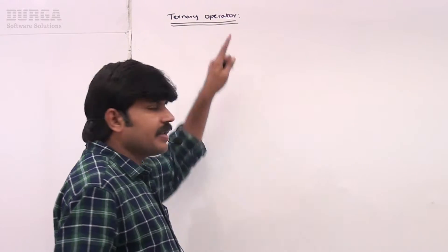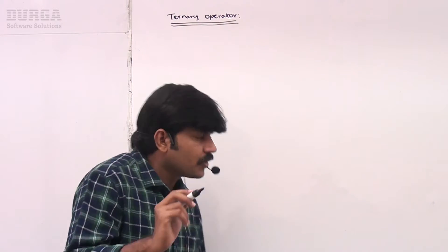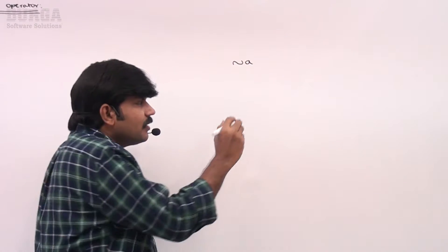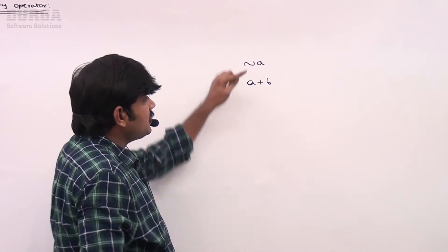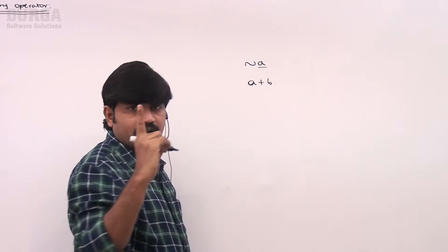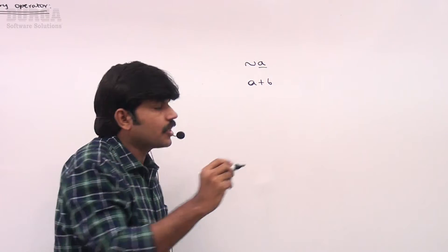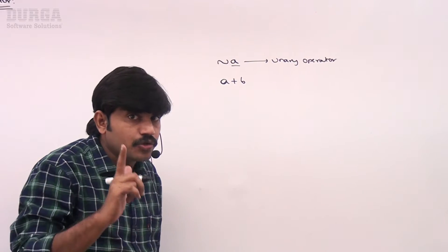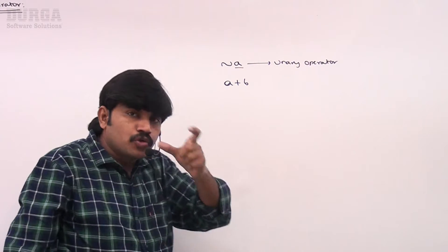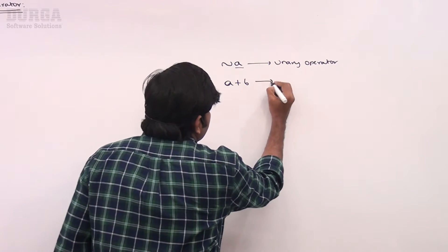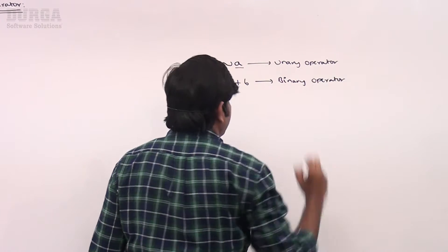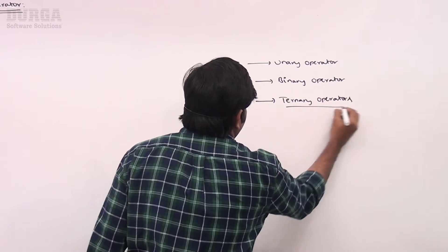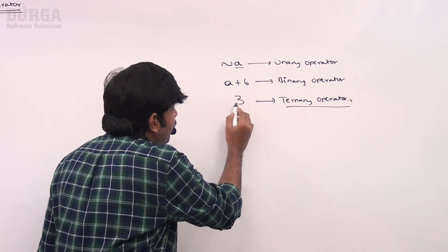Why the word 'ternary'? Consider the bitwise complement operator — the tilde applied to only one argument. If an operator is applicable to only one argument, it is called a unary operator. If the operator is applicable to two arguments or two operands, it is called a binary operator. So ternary operator means — how many operands are there? Three operands.